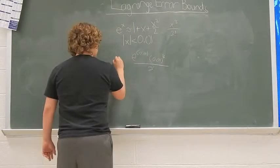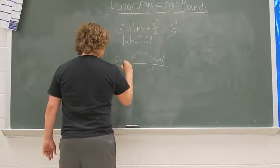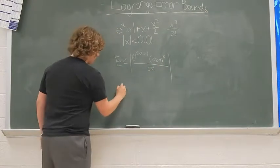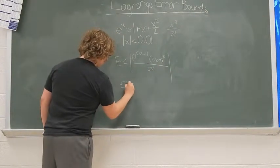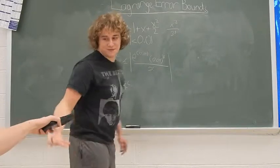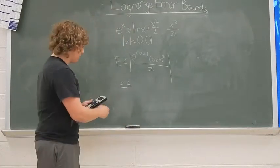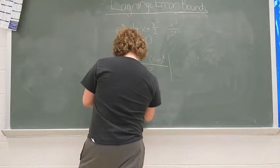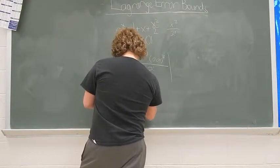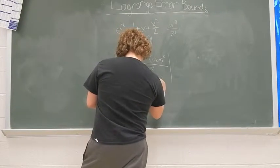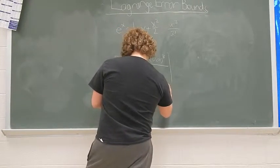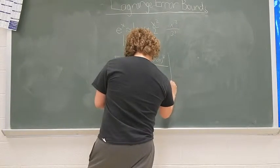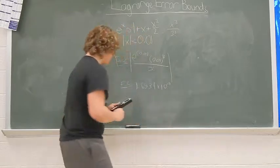And then you're going to take the next term. And then you get the value of this. And then you plug this in the calculator. You get 1.6834 times 10 to the negative 7. And that's your error.